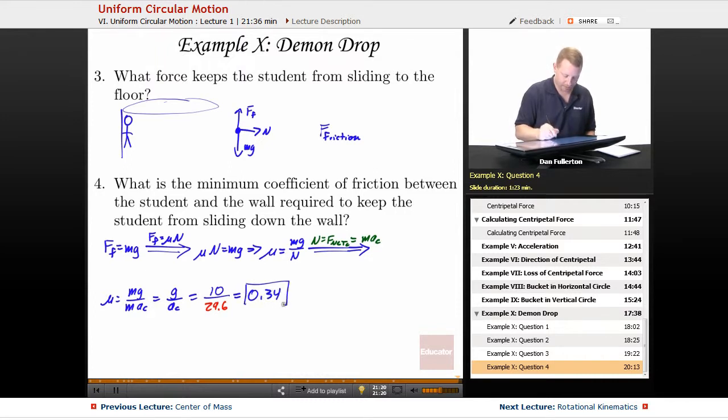That's the coefficient of friction that we need in order to keep the student from sliding down the wall. All right, hopefully that's a pretty good refresher or fundamentals on uniform circular motion. Thanks so much for joining us at educator.com. Make it a great day, everyone.